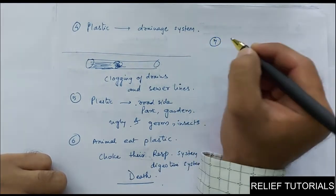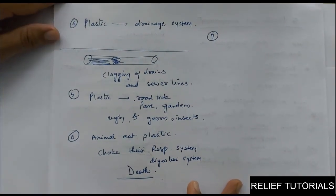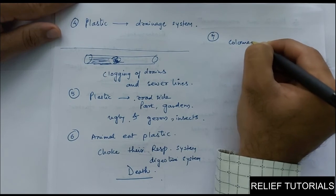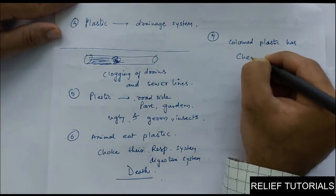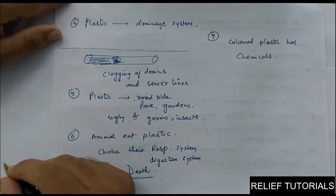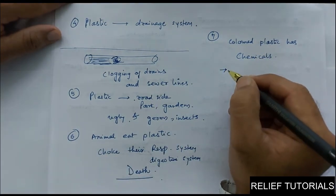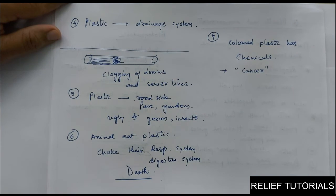Colored plastic — we have seen different colors of polythene bags: white, black, blue, pink, orange. This type of colored plastic has chemicals in it. Workers working in such factories inhale these chemicals into their respiratory system, or the chemicals may enter their digestive system, and it can cause cancer. So it has a very harmful effect.